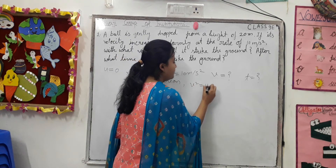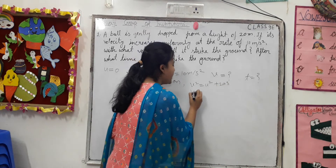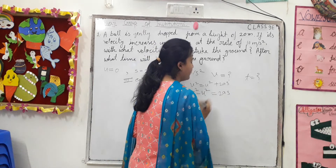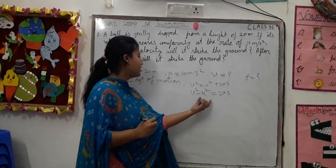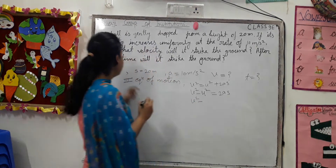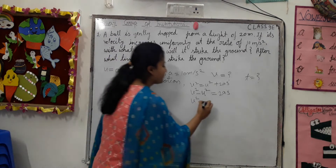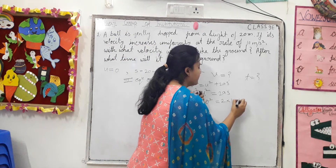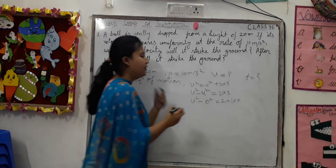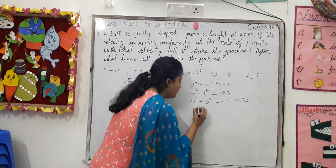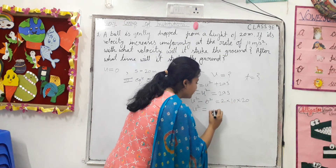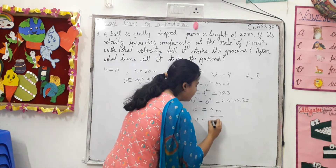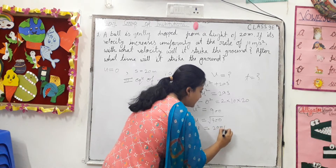We know that the third equation of motion is: v² = u² + 2aS. We can rewrite this as v² − u² = 2aS. Now putting in the values: u = 0, a = 10 m/s², and S = 20 m. After solving, we get v² = 400. Therefore v = √400, which gives v = 20 meters per second.